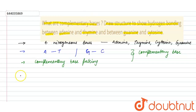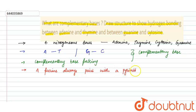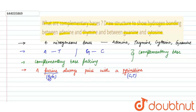We can also say that a purine always pairs with a pyrimidine. There are two types of nitrogenous bases: purine and pyrimidine. Examples of purines are adenine and guanine, while cytosine and thymine are pyrimidines. So adenine is bonded with thymine and guanine is bonded with cytosine.